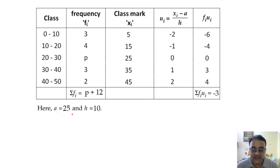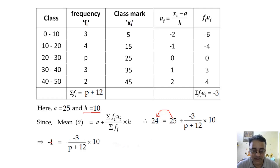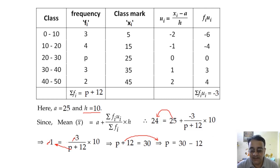With a = 25 and h = 10, write the mean formula: 24 = 25 + (−3)/(p + 12) × 10. Shift 25: 24 − 25 = −1. So −1 = −30/(p + 12). The negatives cancel; cross multiply: p + 12 = 30. Therefore p = 30 − 12 = 18.